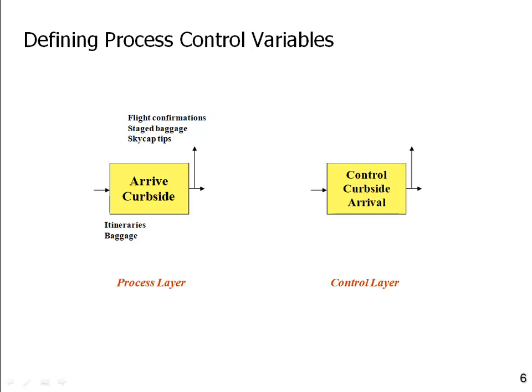Imagine there's a second layer to your process map — almost another process map you could draw for what the control process is around, in this case, arriving at the curbside. I don't actually draw the second process map, but thinking of it as a second process map with a control layer is a good way to think about it.